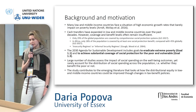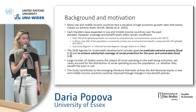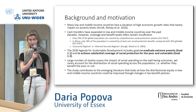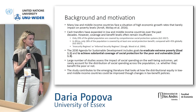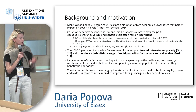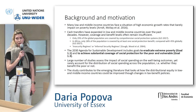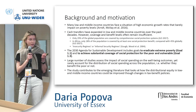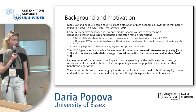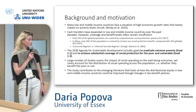In the welfare state literature, African regimes are typically classified as insecurity or informal insecurity regimes, as compared to the welfare states common in European countries. There are quite a large number of studies that assess the impact of social spending on well-being outcomes, especially at the macro level, but they rarely account for the distribution of social spending across the population and whether this spending benefits the poor. This study contributes to the emerging literature on how distributional equity in low and middle income countries could be improved through changes in tax benefit policies.